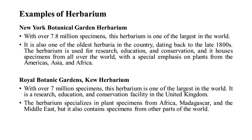The Royal Botanic Gardens Kew Herbarium, with over 7 million specimens, is one of the largest in the world. It is a research, education, and conservation facility in the United Kingdom, specializing in plant specimens from Africa, Madagascar, and the Middle East, but also containing specimens from other parts of the world.